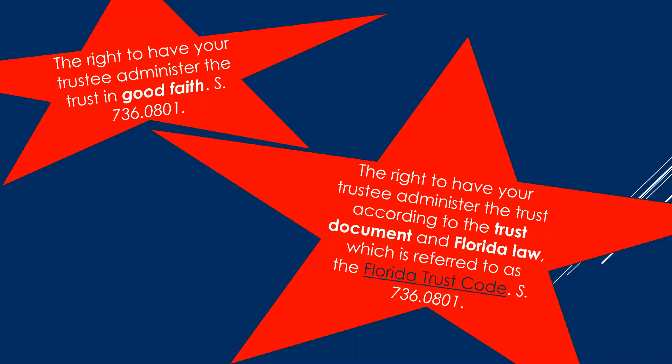A beneficiary has a right to have the trustee administer the trust according to the trust document and Florida law. This may seem obvious — it's not. I recall one trustee who said he was going to give his daughter money from the trust, but the trust document didn't permit distributions to the daughter; it only permitted distributions to the trustee's sisters. You've got to follow the trust document. Individuals serving as trustee often don't understand the discretion in responding to requests for principal.